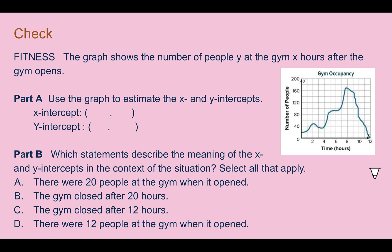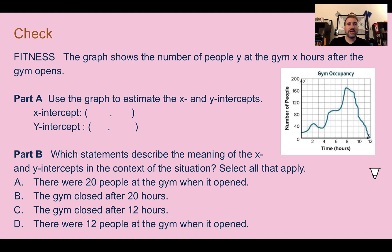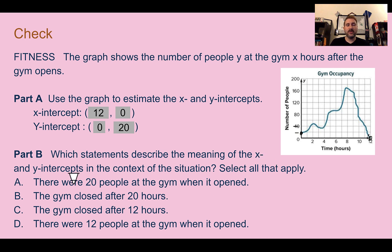Check your understanding: determine the x and y-intercepts and what they mean in context. The x-intercept is at (12, 0) and the y-intercept is at (0, 20) — counting by 20s on the scale. There were 20 people when the gym opened (y-intercept), and the gym closed after 12 hours when there were no people left (x-intercept). The answers are A and C.